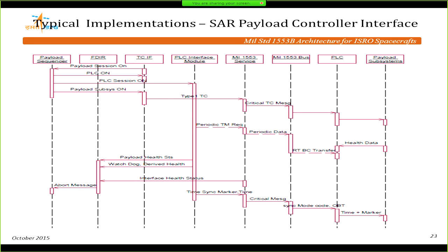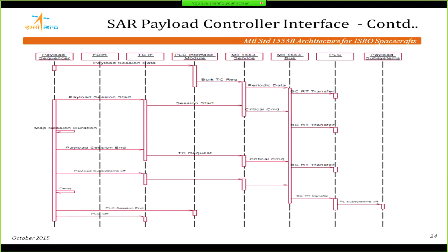A glimpse of a SAR payload controller — similar to a NASA JPL collaboration — shows a sequencer with TC and 1553 interfaces. Type-1 commands are sent as critical messages to the payload system. Periodic TM requests keep going, and the interface module sends health status back to FDR modules. Watchdogs are available for the payload system. Each payload controller can itself request an abort message. Time sync markers and onboard time are transferred across systems throughout the session.